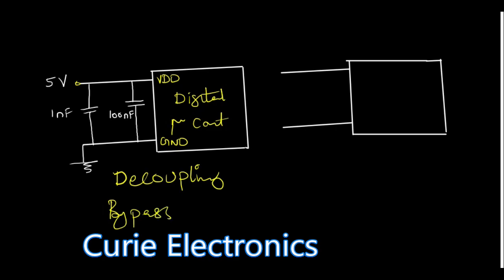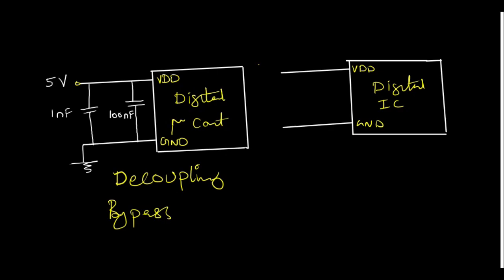Now let us assume that we have a digital IC or microcontroller, and this is the VDD pin or VCC pin and ground, and there is no capacitor connected, no decoupling capacitor or bypass capacitor is connected. Now what happens?